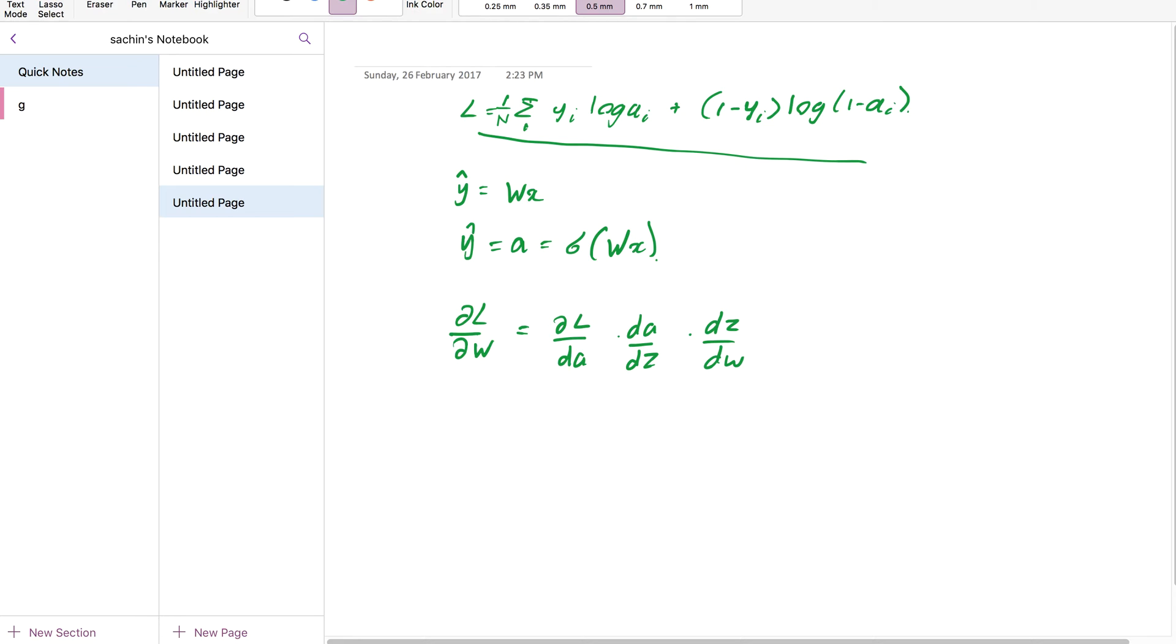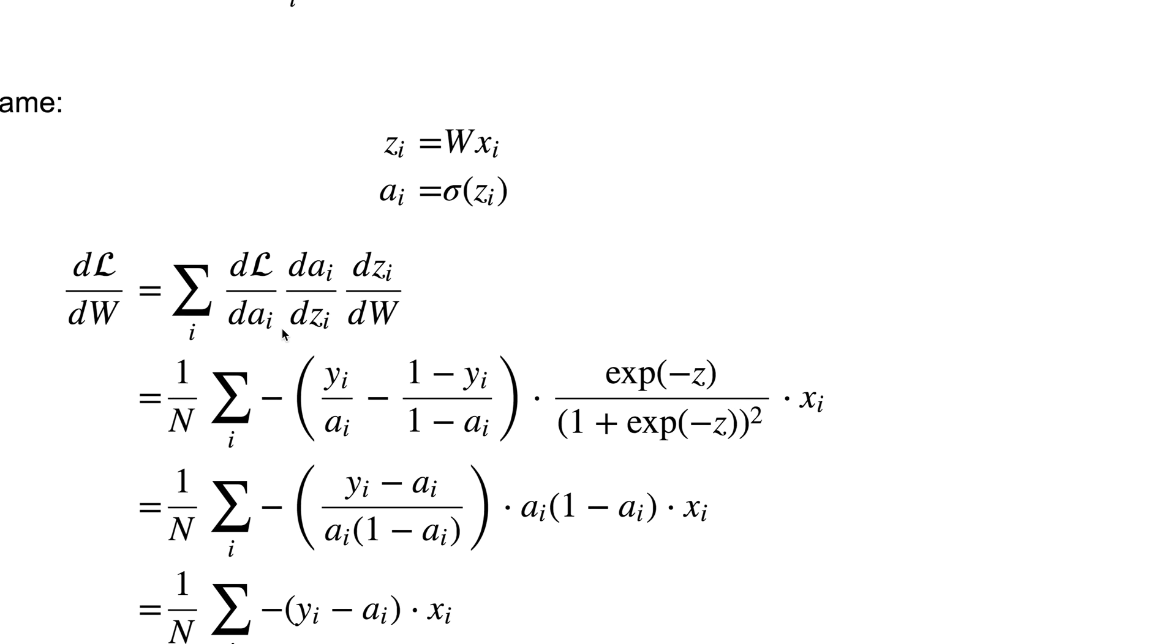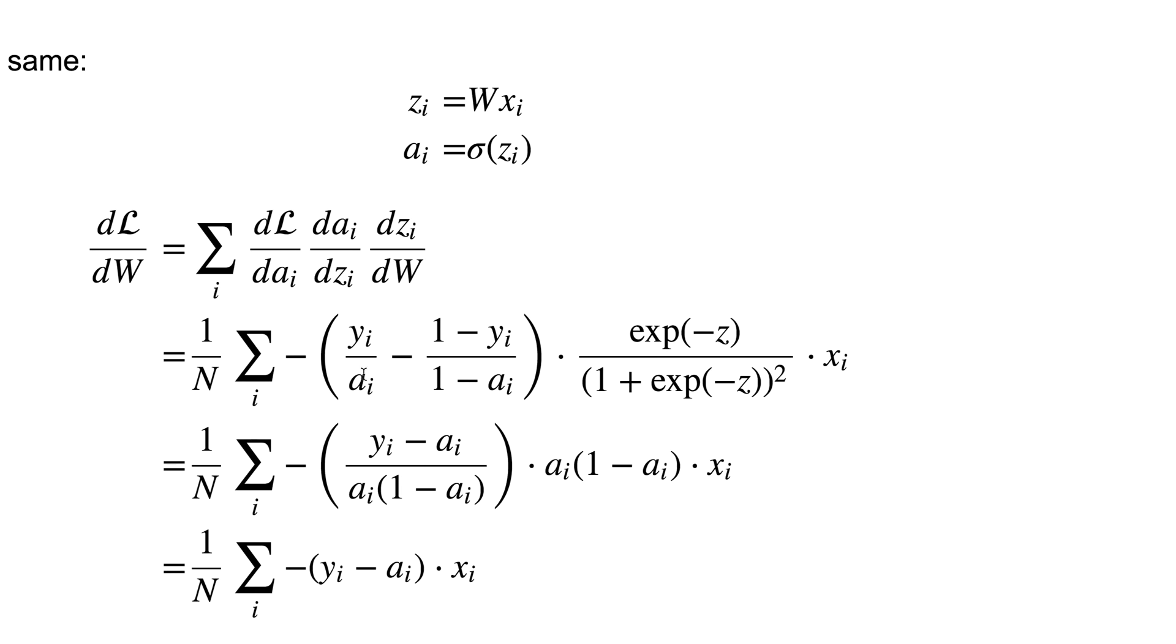Okay, so keep in mind like we have three, so we obviously have the loss function over here, and then we have the fact that the activation is the sigmoid of z, and the z is equal to wx. Okay, so I've gone ahead and done the maths over here. Okay, so when you do dL/da you get this term.